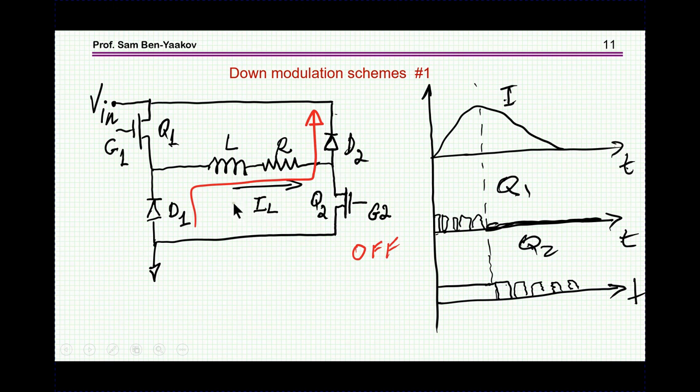However, there is a limit to the rate at which we can go down because in either case we are sort of discharging, and the slowest rate will be this one. So even if we keep this one on all the time, there is a certain rate at which it will go down.